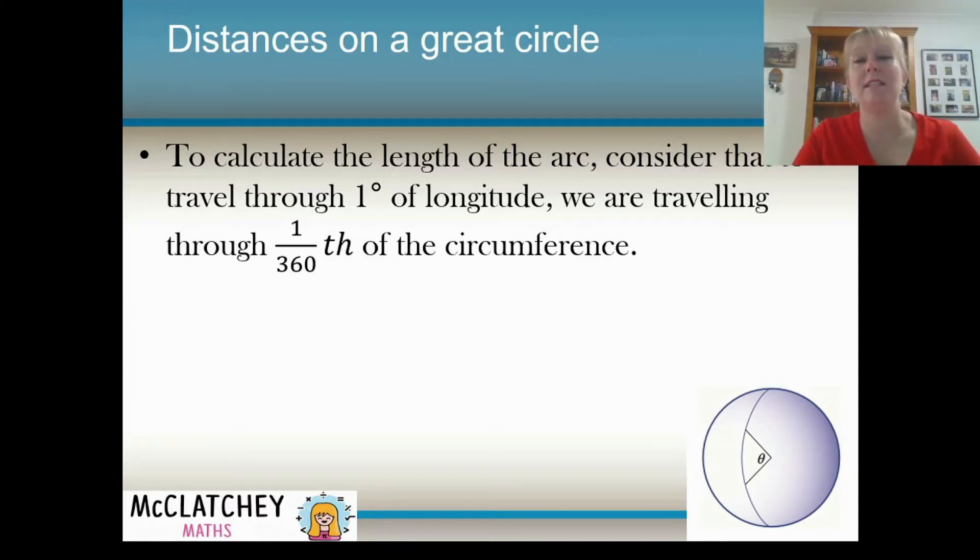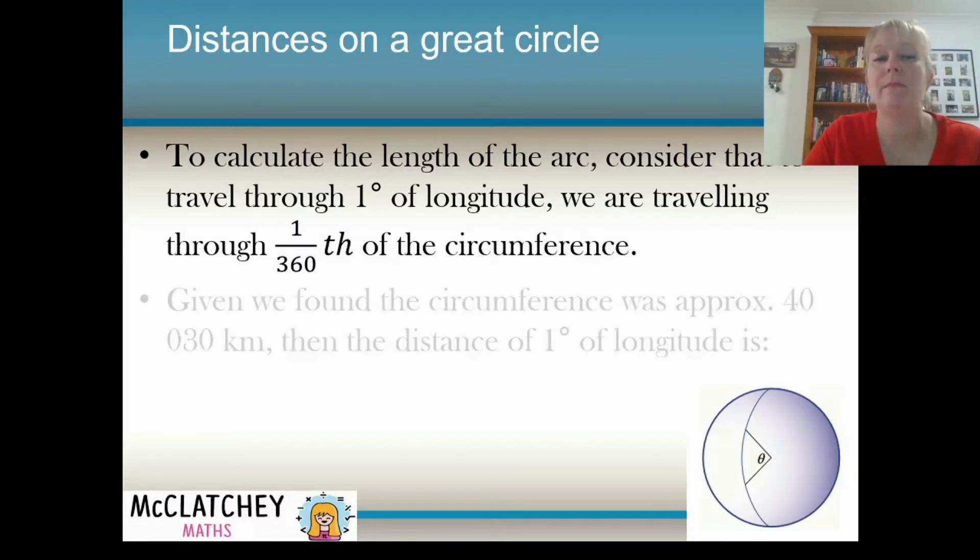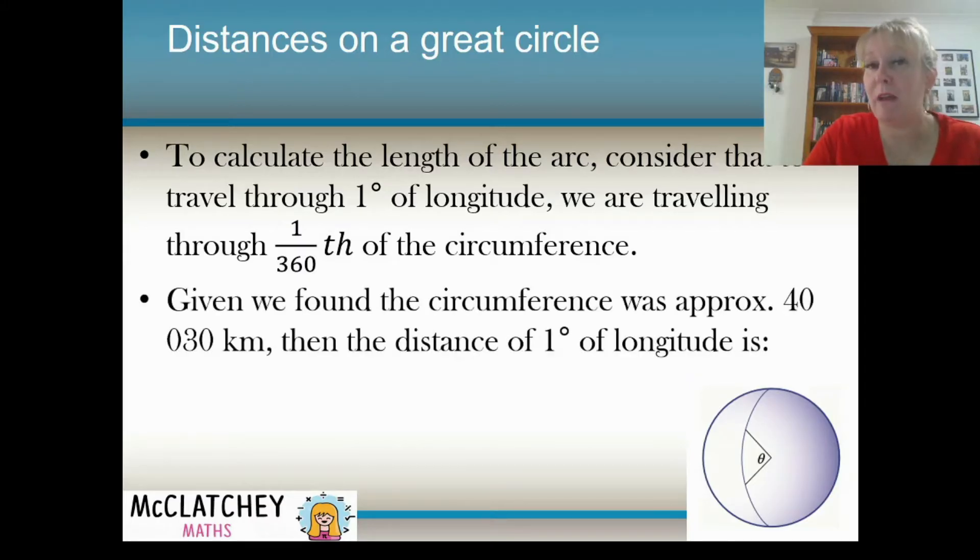So if we know what the circumference is, we can work out the length of one degree of longitude. So given that we already talked about that the circumference is 40,030 kilometers, if we divide that by 360, which is the same as multiplying it by 1/360th, we come to our magic number of 111.2 kilometers. And it was that easy. So that's where that number actually comes from.